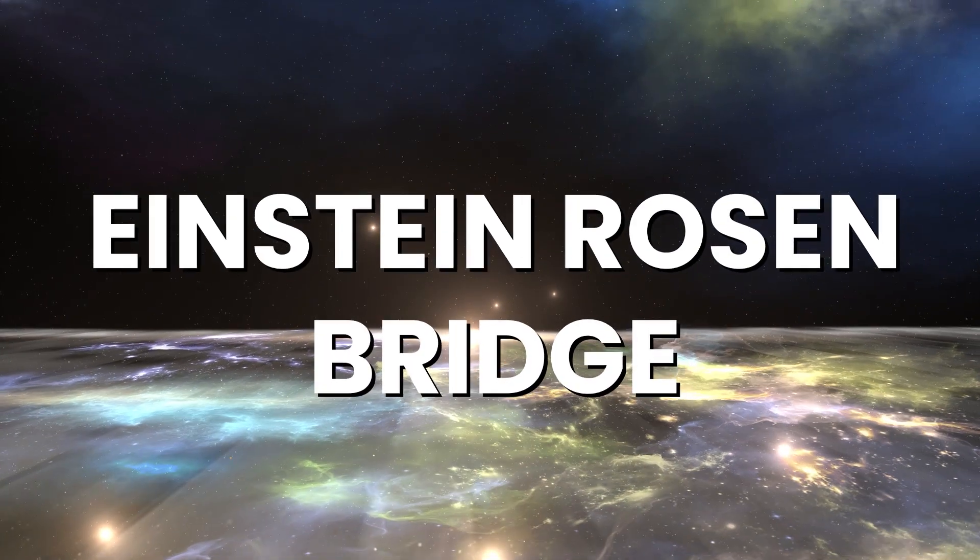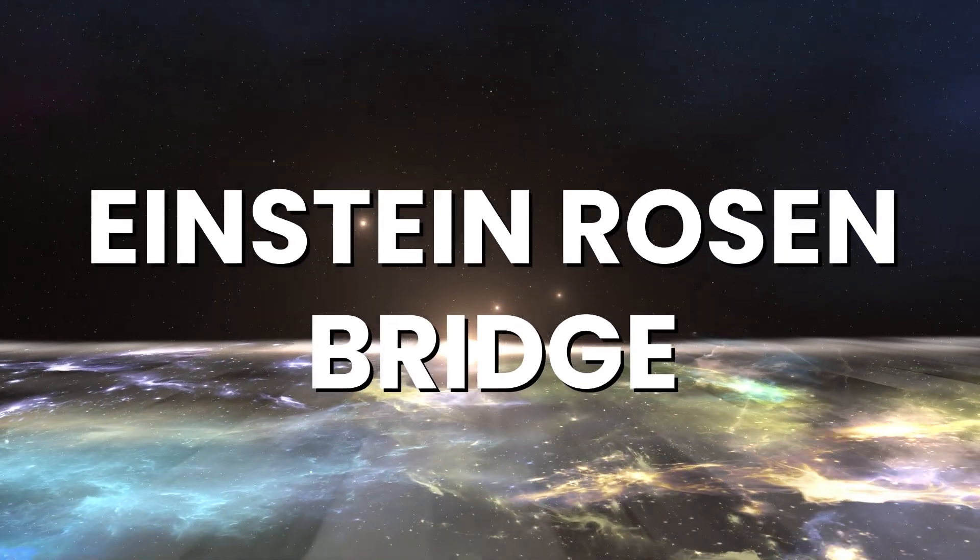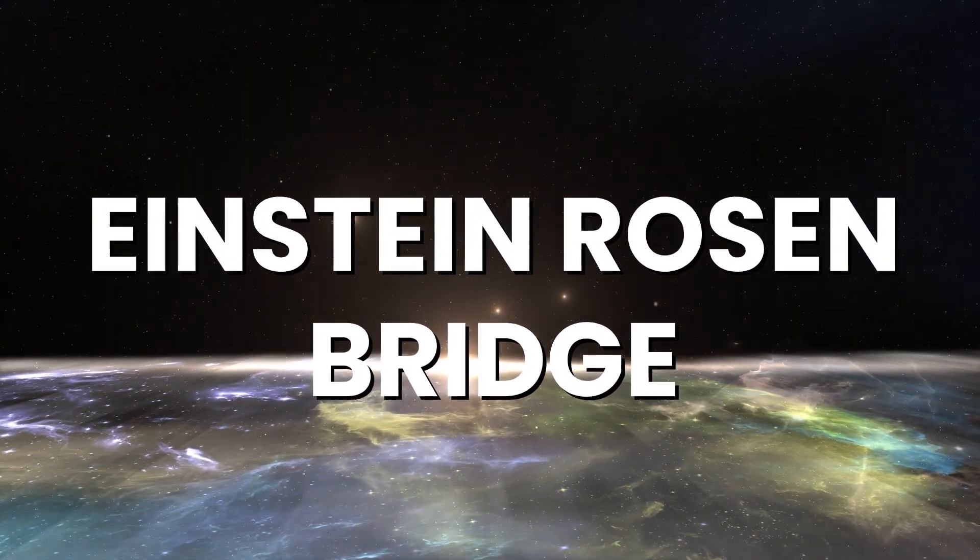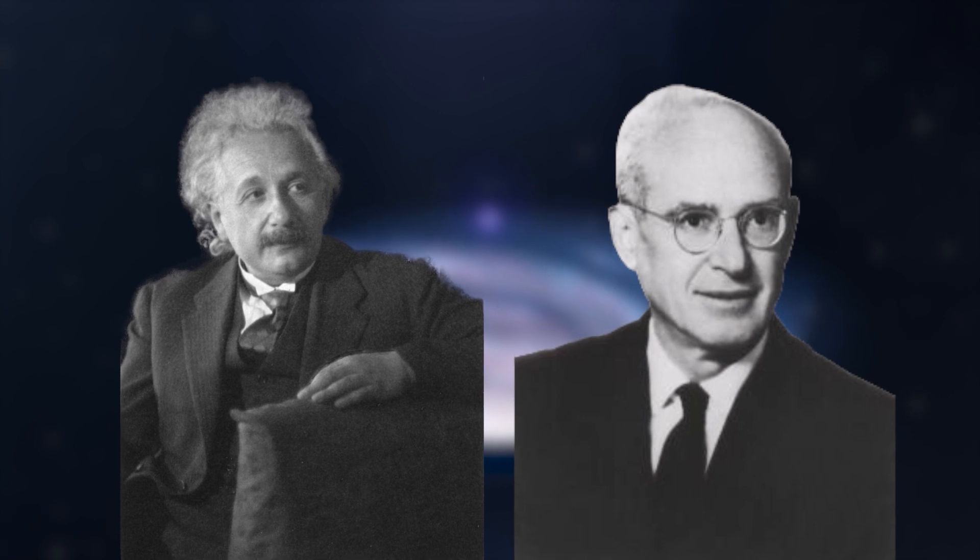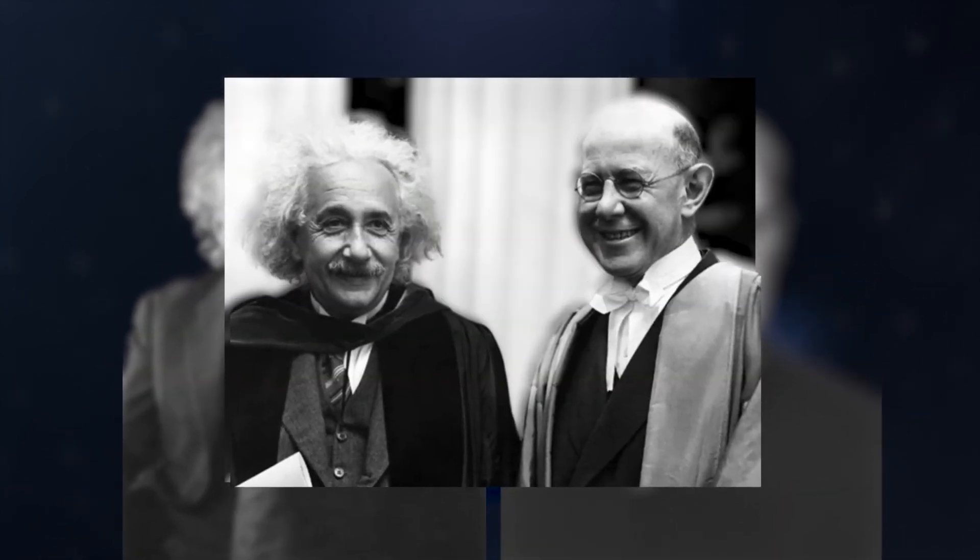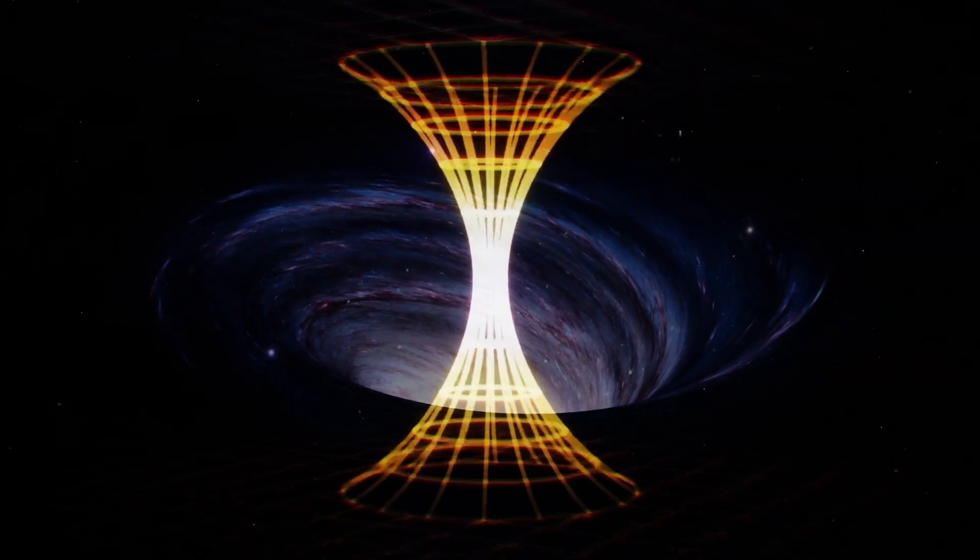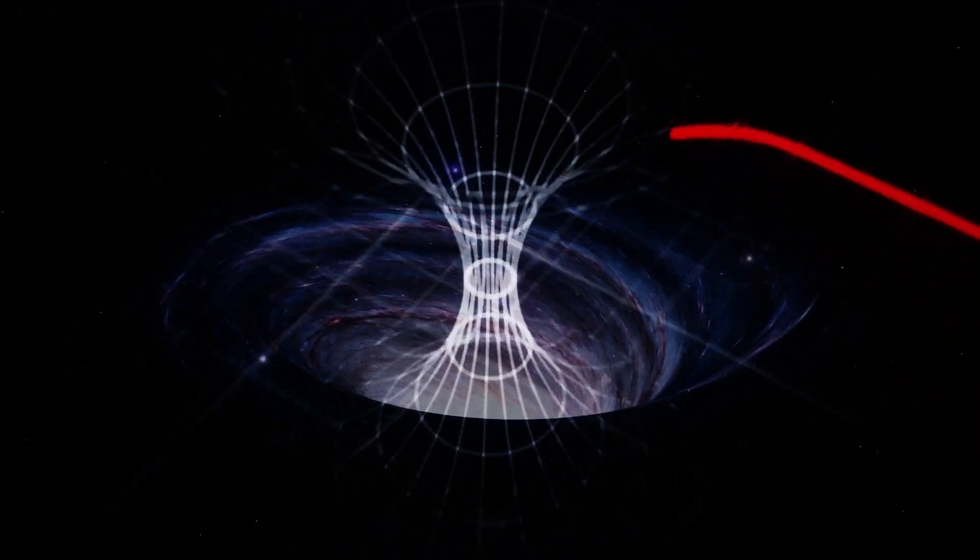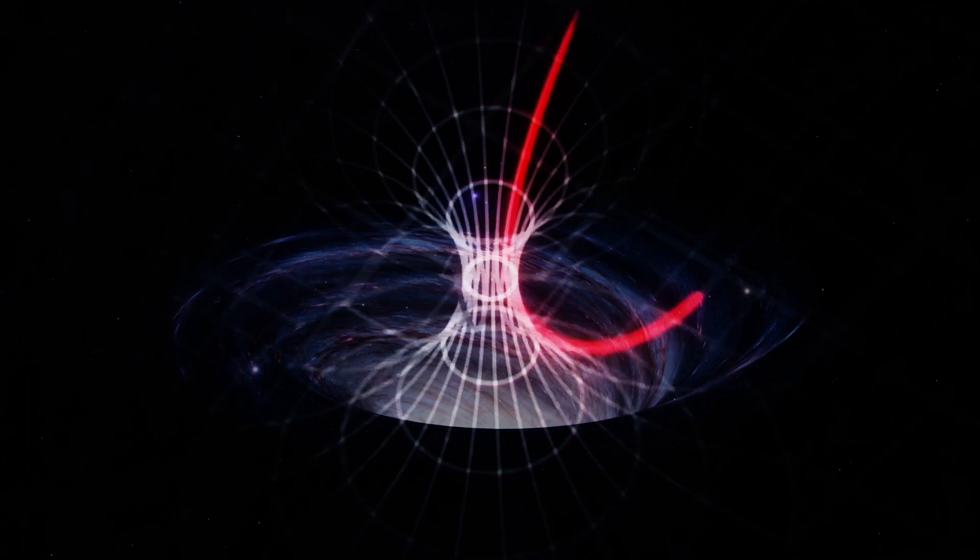Einstein-Rosen Bridge is the scientific name for the wormhole solution. It's named after Albert Einstein and Nathan Rosen, who worked together and came up with this idea in 1935. So it is very easy to understand wormholes. Basically, it's a shortcut that links two points in space-time.